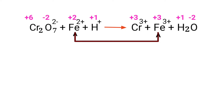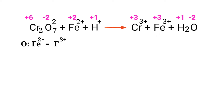In this equation, iron has a charge of +2 and is changing into +3, so iron is being oxidized. Chromium has a charge of +6 and is changing into +3, so chromium is being reduced.